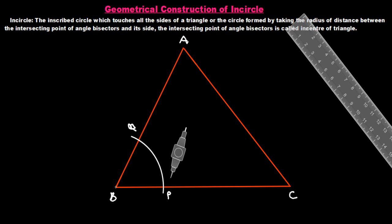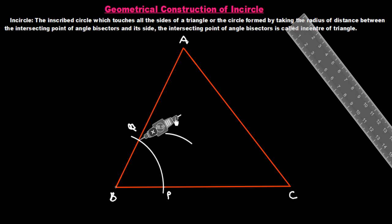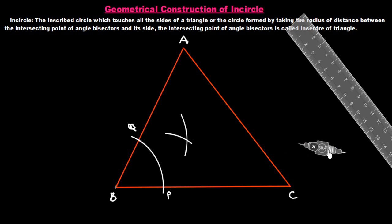Now we put the needle at point P then at point Q one by one and draw another arc inside the triangle. We make the arc from P, then putting the needle at Q we draw another arc. These two arcs intersect each other, and we call that intersection point R.